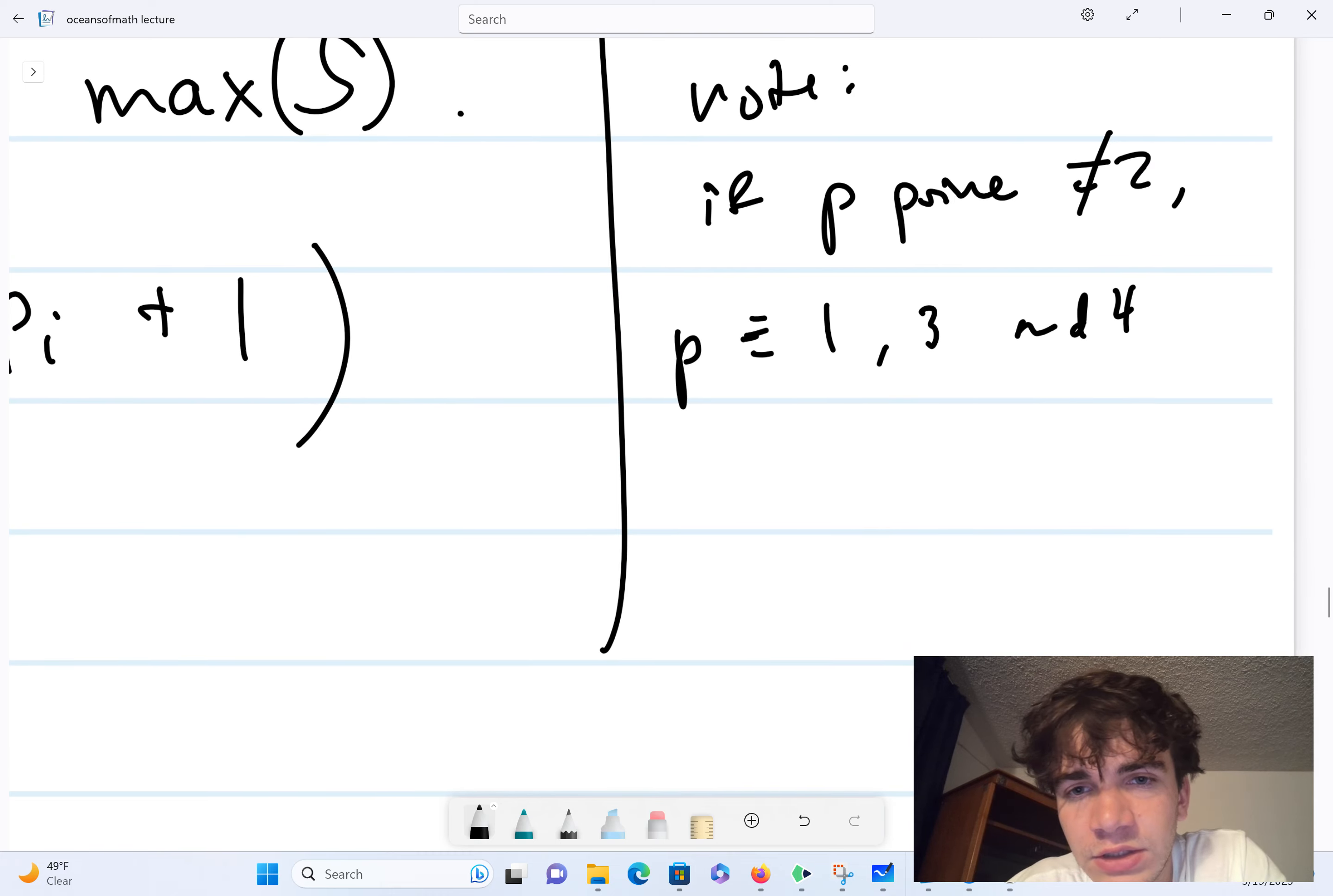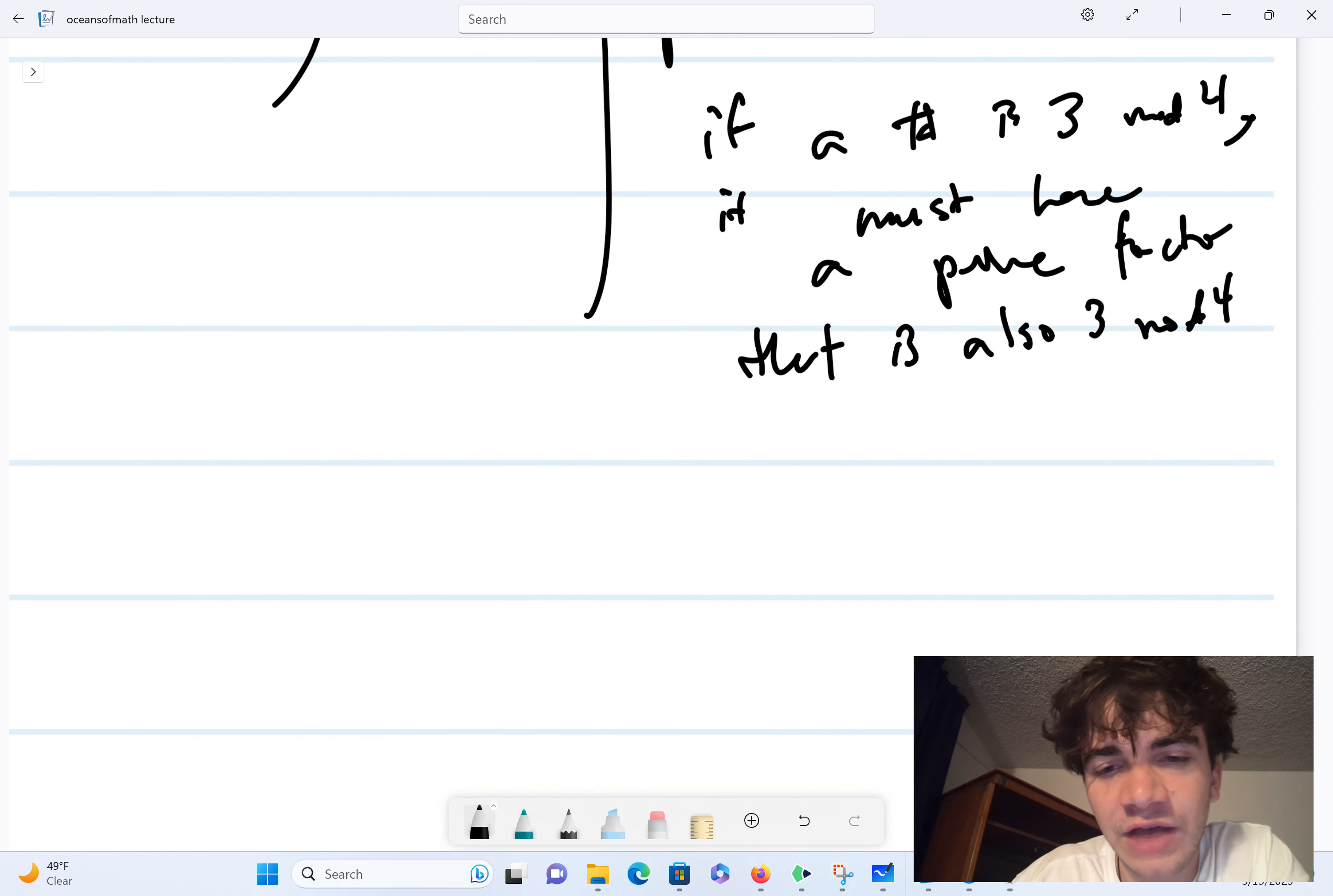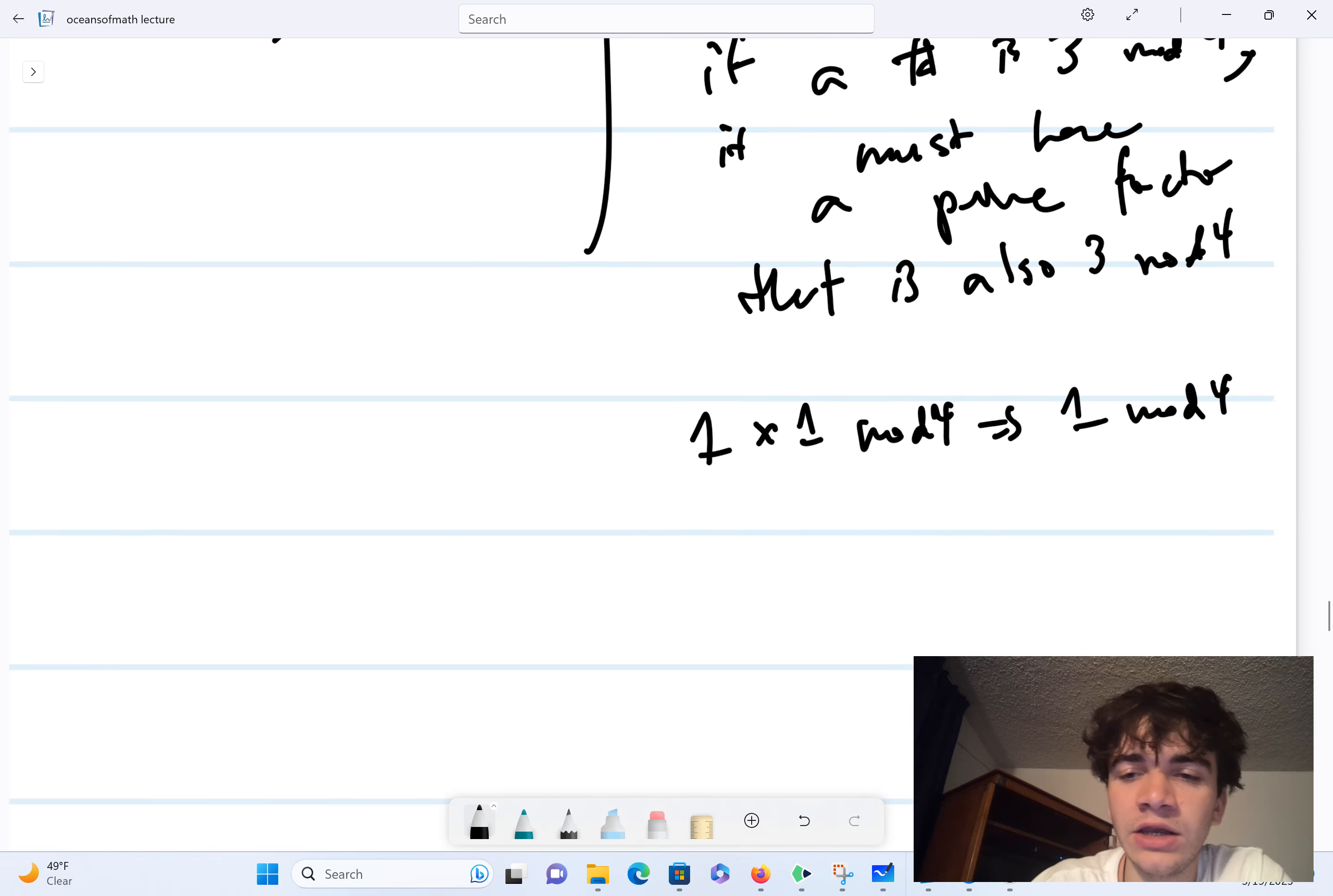So notice that if a number is 3 mod 4, it must have a prime factor that is also 3 mod 4. And that's simply because if I have a number that's 1 mod 4, and I multiply it by 1 mod 4. So if I take two numbers that are 1 mod 4, and I multiply them together, I'm going to get a number that's also 1 mod 4.